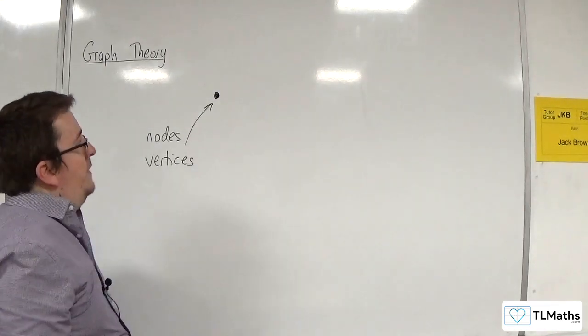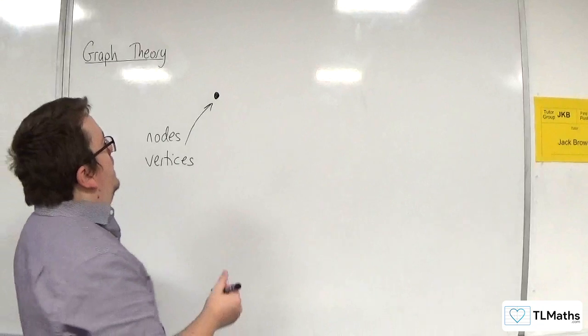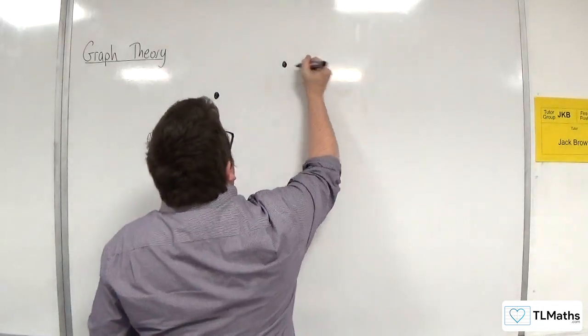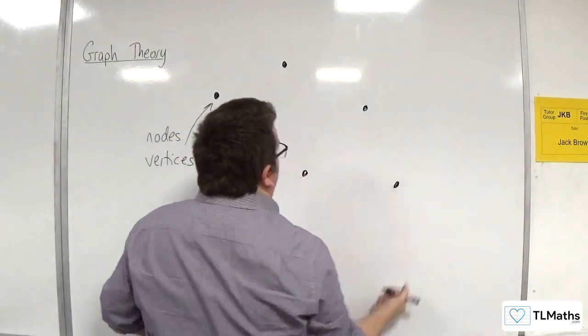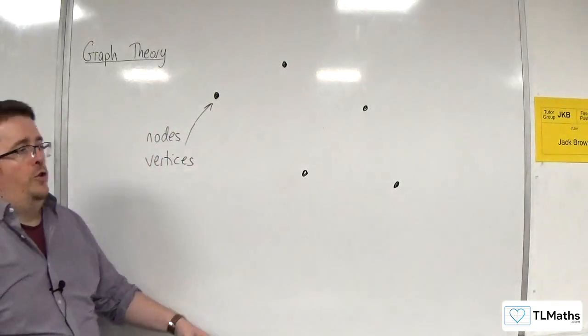So that is one node, or one vertex. And let's say we've got another few. Now these may be webpages on your website.